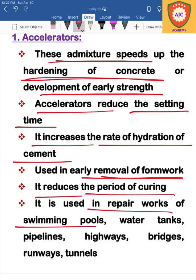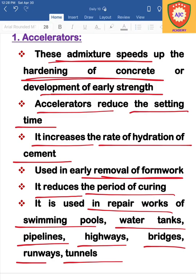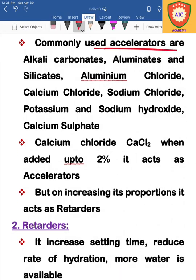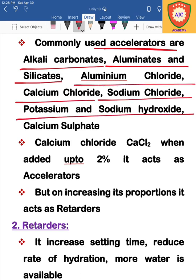Accelerators are used in repair work, swimming pools, water tanks, pipelines, highways, bridges, runways, and tunnels. The chemical types used as accelerators include alkali carbonates, aluminates and silicates, aluminium chloride, calcium chloride, sodium chloride, potassium and sodium hydroxide, and calcium sulfide.